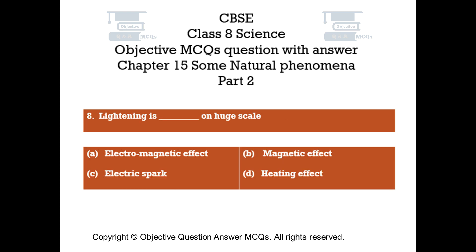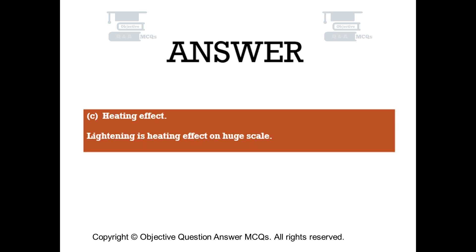Question number 8: Lightning is blank on a huge scale. Option A: Electromagnetic effect. Option B: Magnetic effect. Option C: Electric spark. Option D: Heating effect. The right answer is Option C — electric spark. Lightning is an electric spark on a huge scale.